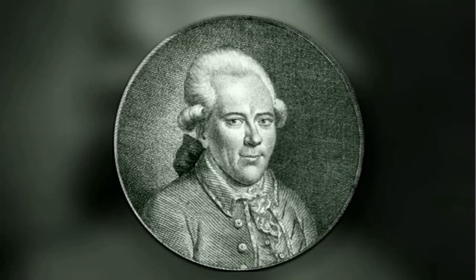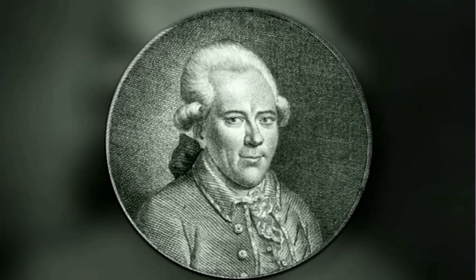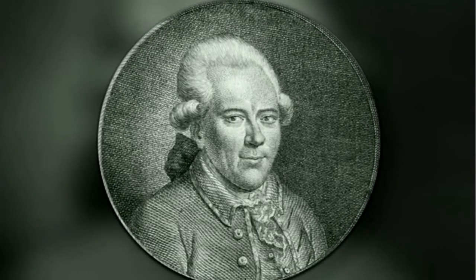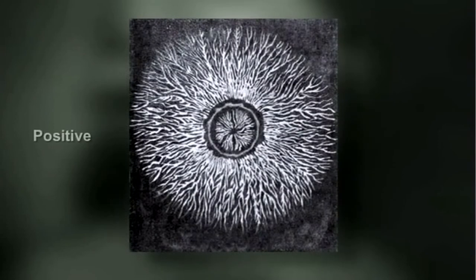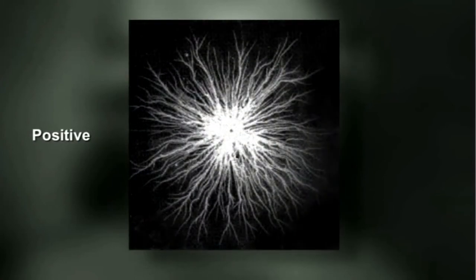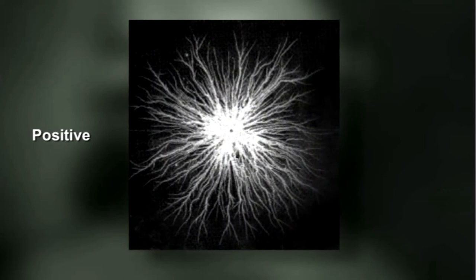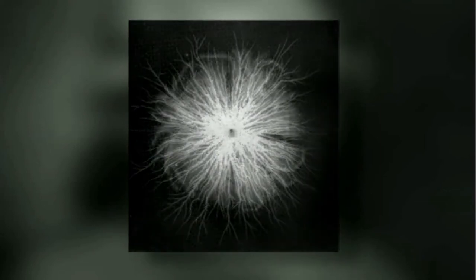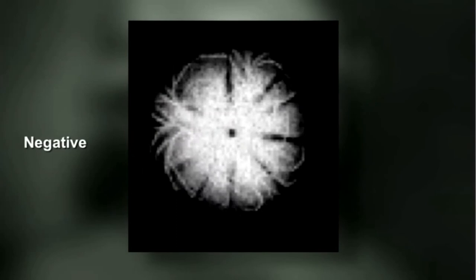George Christoph Lichtenberg appears to have been the first to demonstrate the different forms taken by dust on positive and negative surfaces. A line of investigation later followed by others, but with no impact on planetary science.